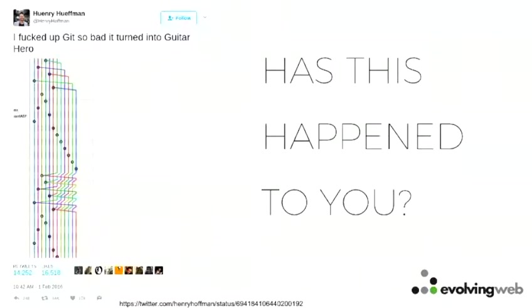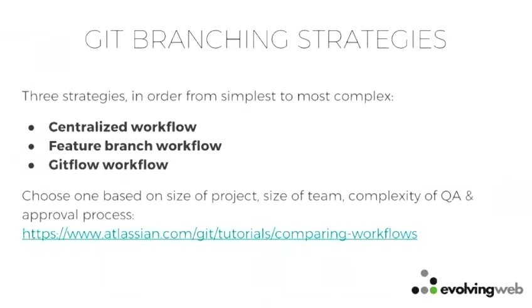Has this ever happened to you? You get some Git branch and it's a mess and you don't know how you got there — it looks like a bad game of Guitar Hero on a level you're not going to pass. The way you avoid that is with Git branching strategies. I'm going to talk about three different Git branching strategies — naming conventions and methodologies — that will allow you to organize your work, going from simple to more complex. Which you choose depends on how many people are on your team, how big your project is, and how complex your QA process is.